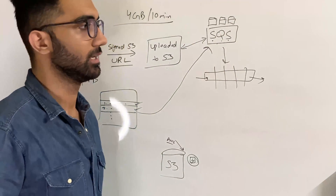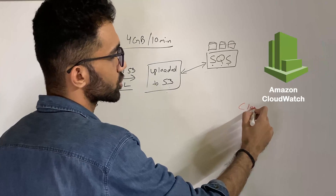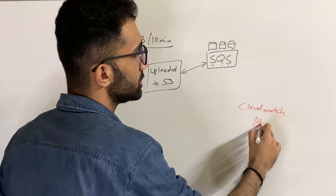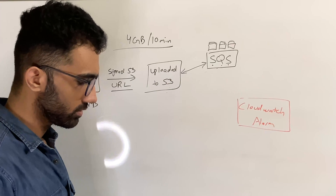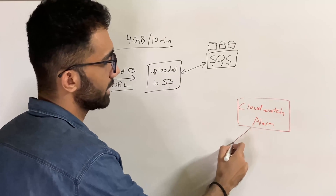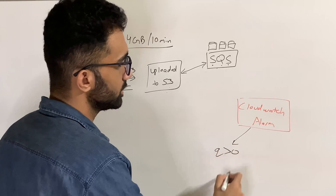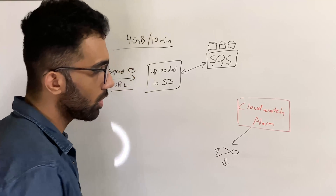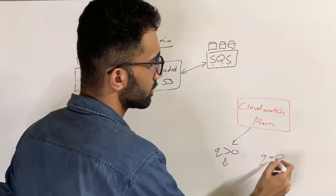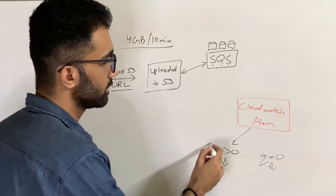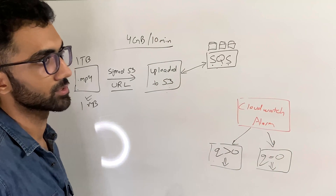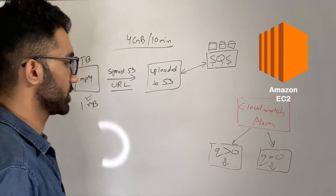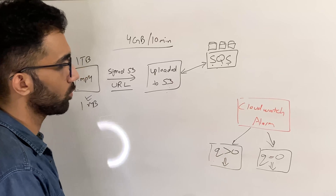That's where S3's job ends. AWS also provides CloudWatch, where you can set alarms based on queue size. You can create an alarm: when the queue size is greater than zero, do something; when the queue size equals zero, do something else. These two conditions drive the rest of the architecture.